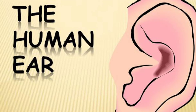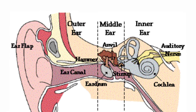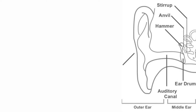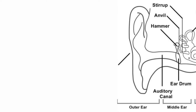Our ear is divided into three parts: external ear or outer ear, middle ear, and internal ear or inner ear. The external ear is the fleshy part, one on each side of our face.